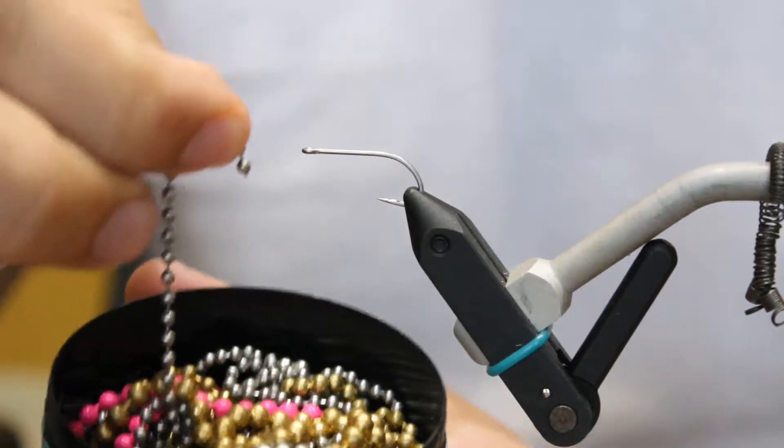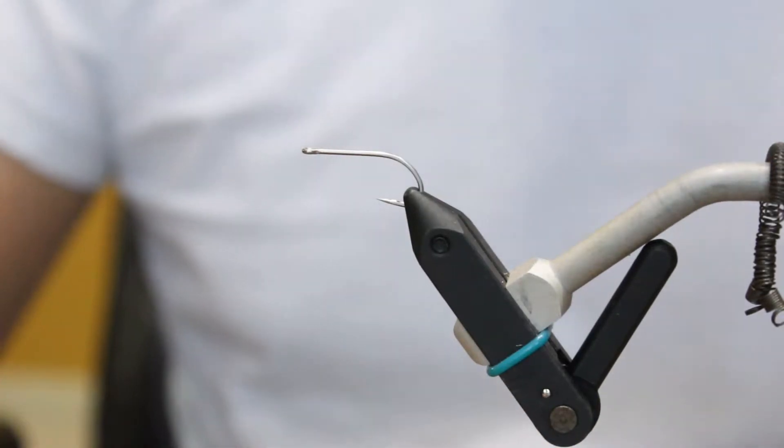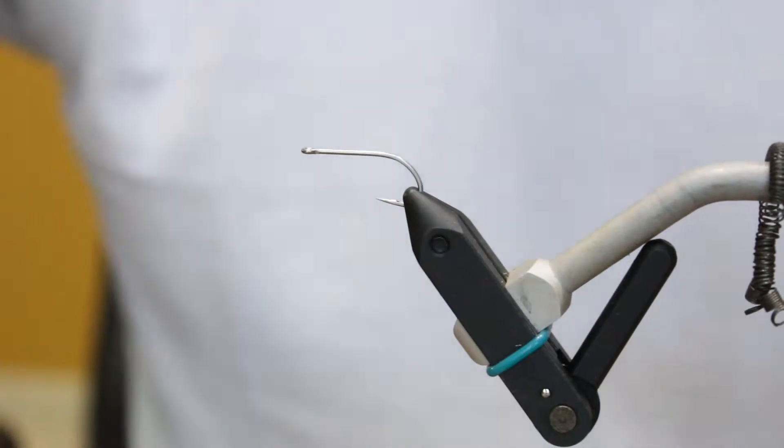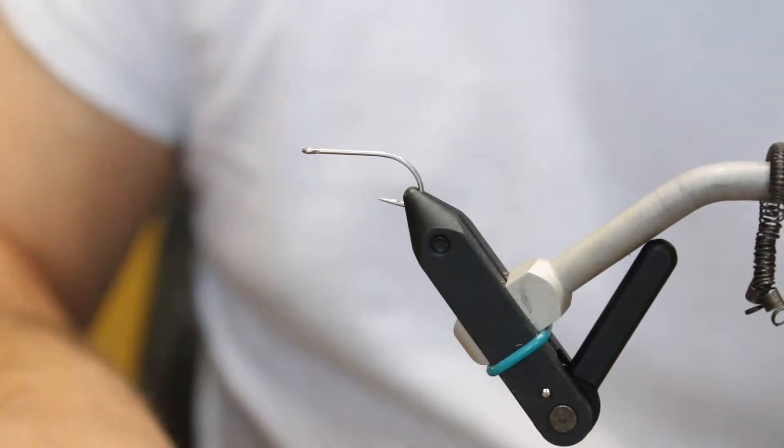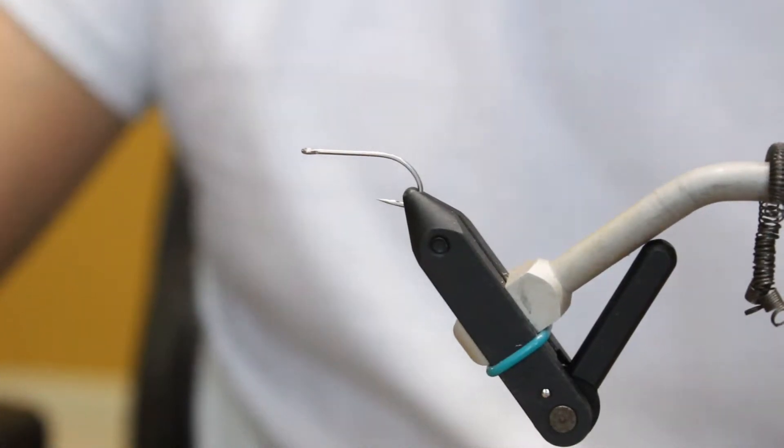And again, you can tie this with bead chain eyes or you can use dumbbell eyes. I like to use bead chain eyes on this just because normally when you're casting to bonefish it's in fairly shallow water.